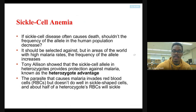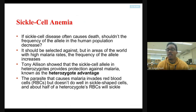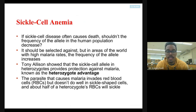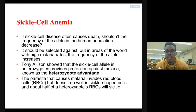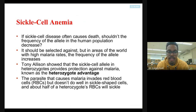Sickle cell anemia is a recessive trait, so in order to get it you need to have two recessive alleles — you need to be homozygous recessive. If this is such a bad thing and causes death before reproductive age, we should be seeing very few humans who end up getting sickle cell anemia, because it should be wiping itself out if it's killing people before they're having kids.